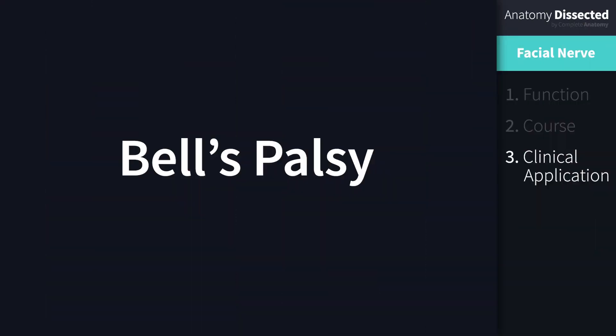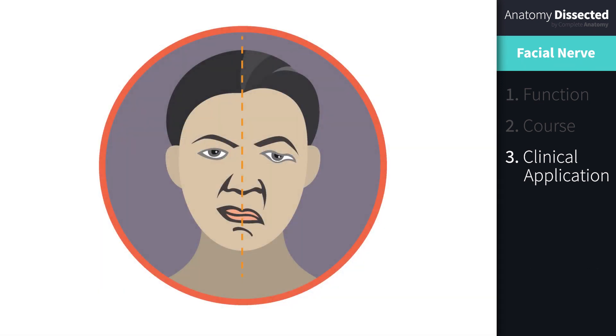The most common cause of facial nerve palsy is Bell's palsy, which is idiopathic, meaning the cause is unknown. It results in unilateral dysfunction of the facial nerve, most obviously exhibited in paralysis of the facial muscles. Diagnosis of the condition is based on appearance and excluding other causes of paralysis. Recovery is usually spontaneous within three weeks.